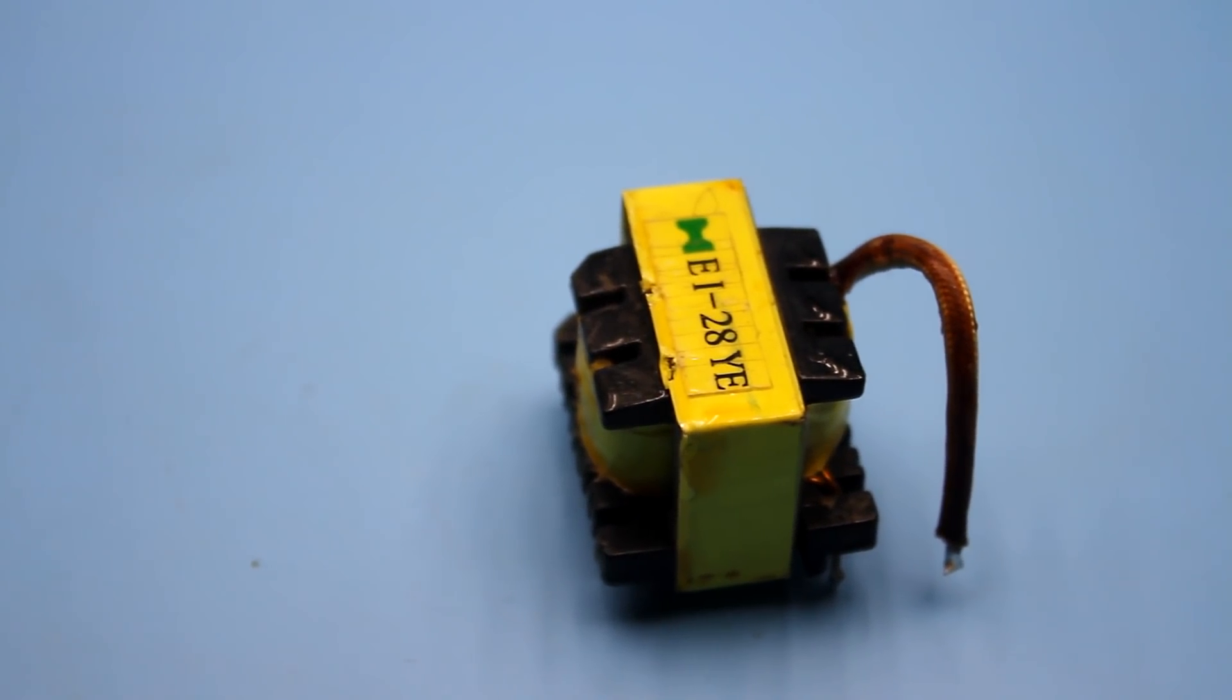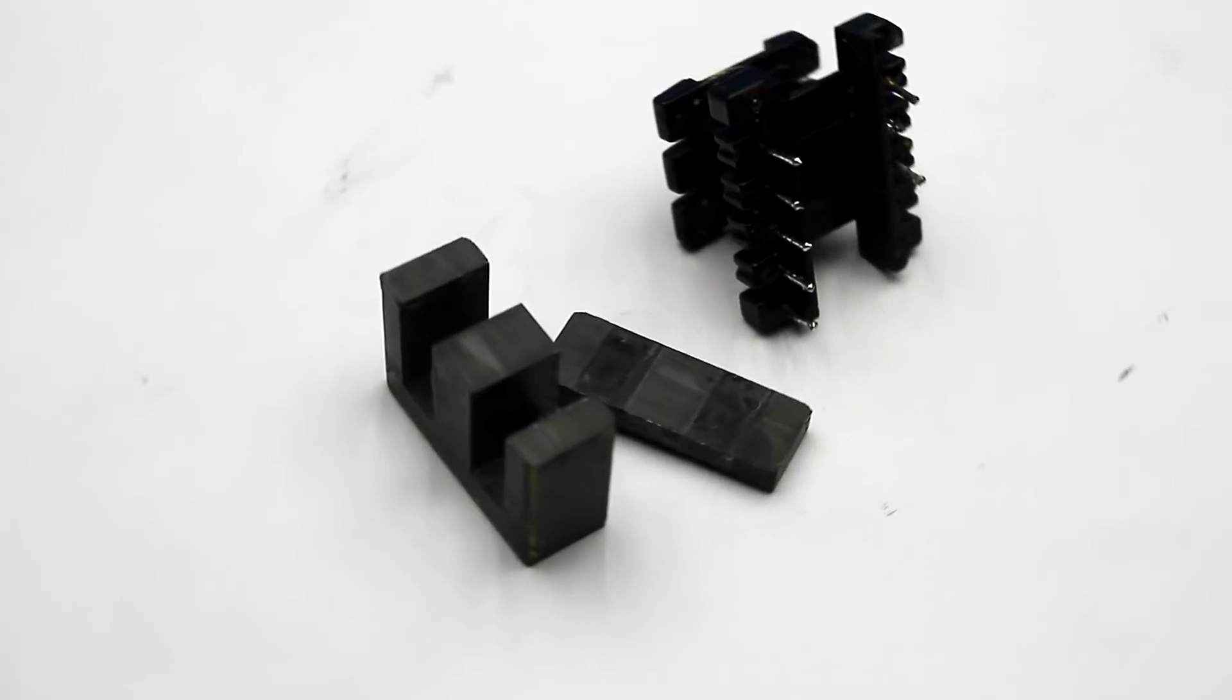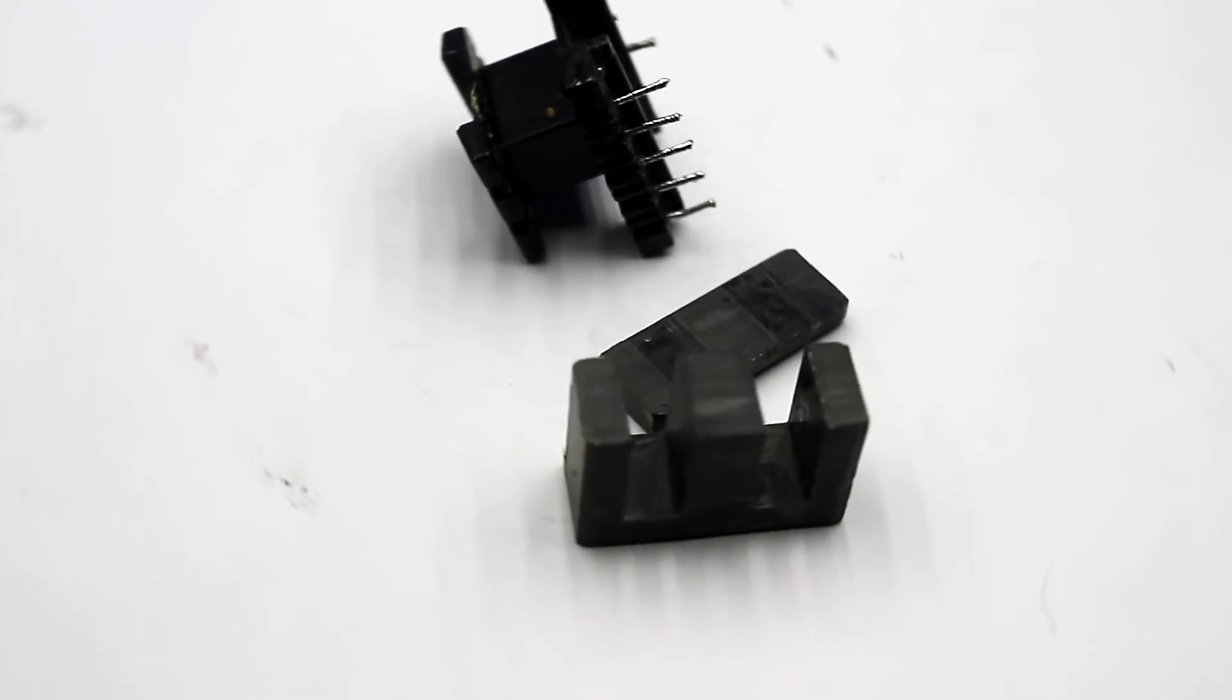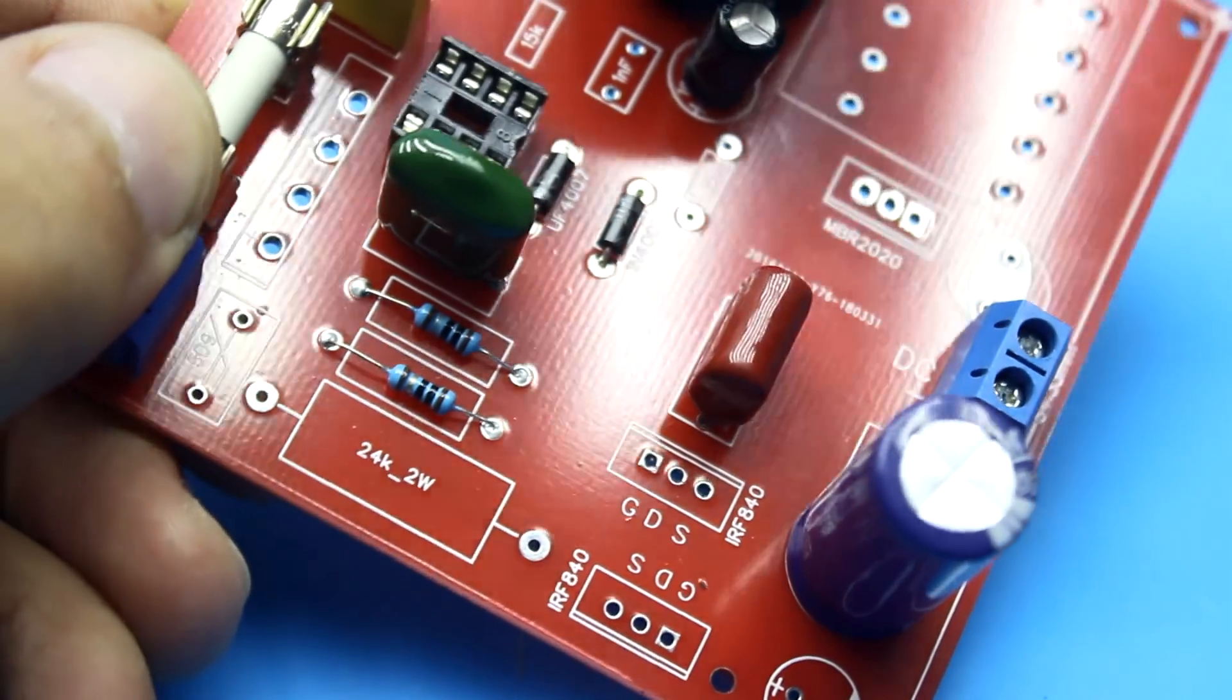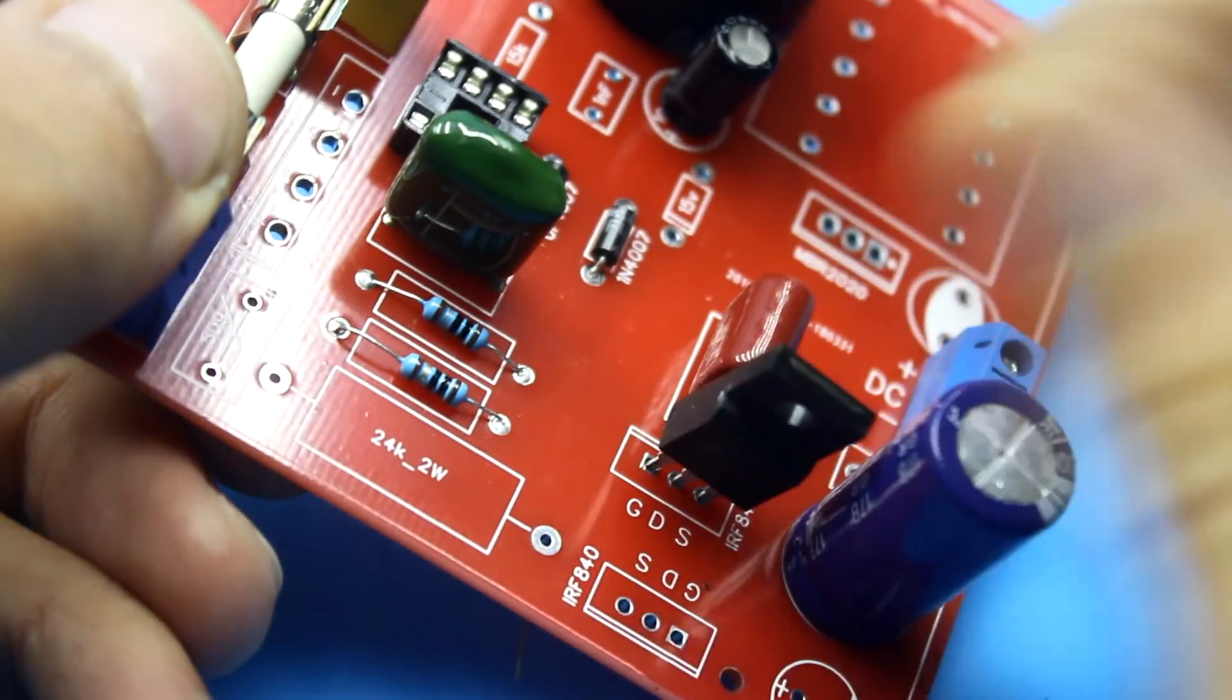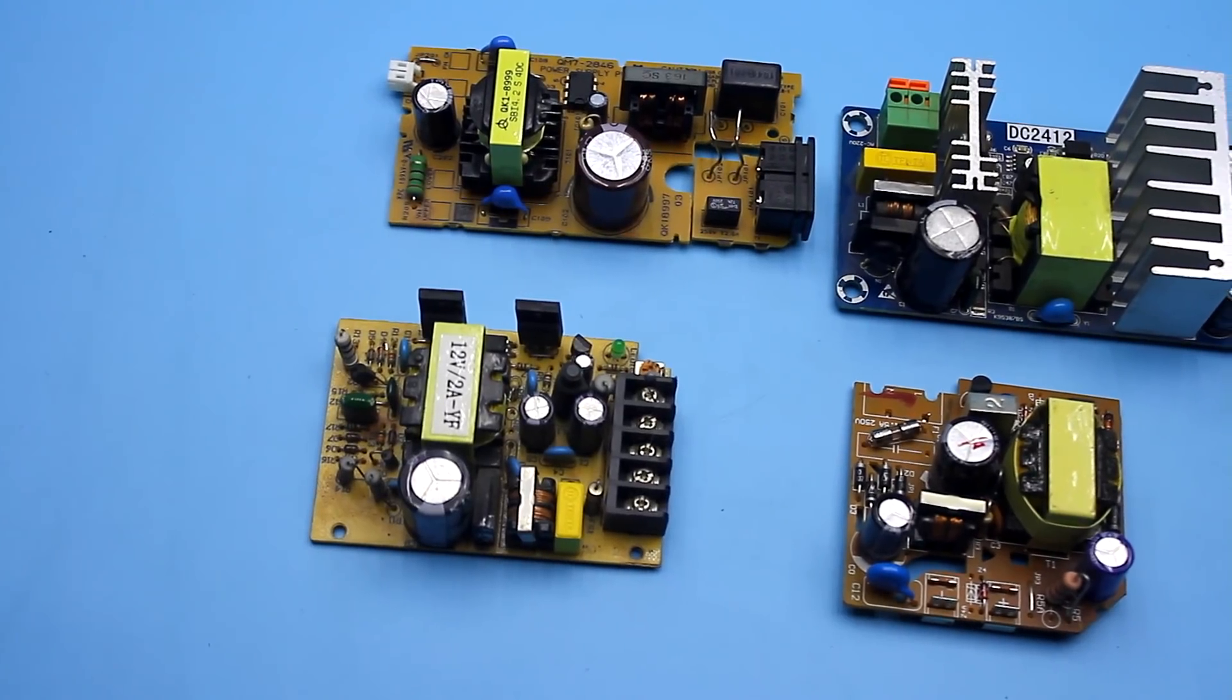Today we will talk about winding a pulse transformer of a mains power supply. In this video, I will show only the process of transformer preparation, calculation and winding. In the next video, we will collect the power source on its base and study the circuits of simple impulse power supplies.